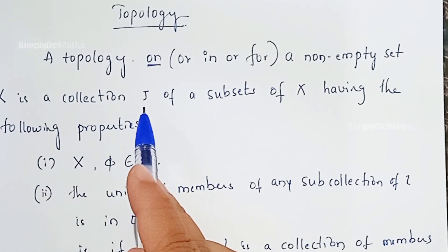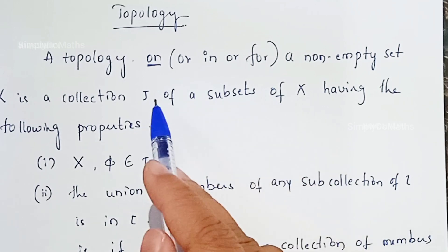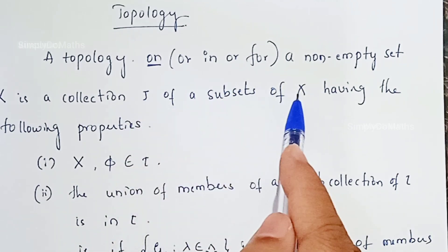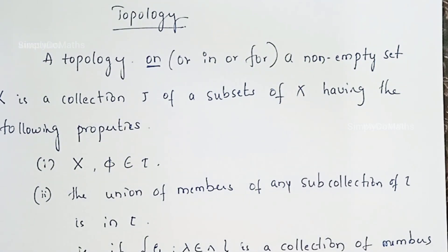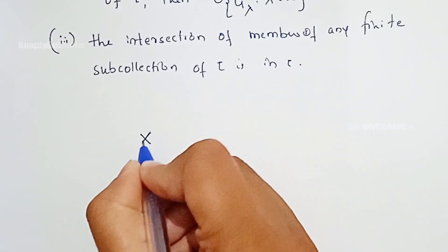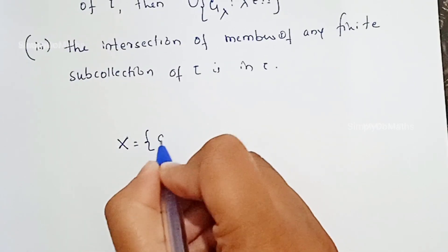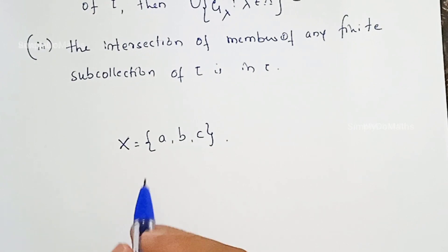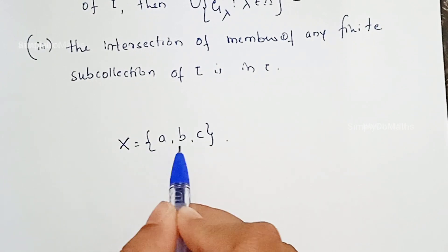So capital X is the basic set. By capital X we collect some elements, and those elements are also sets. So we write: a topology on a non-empty set capital X is a collection tau of subsets of X. Tau consists of elements which are nothing but sets — subsets of X.